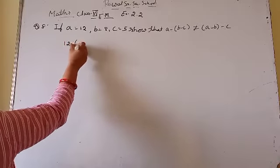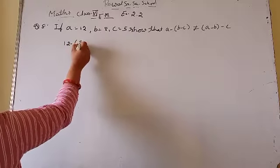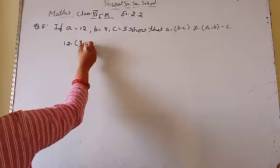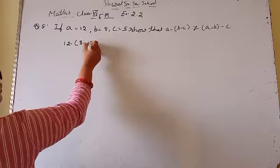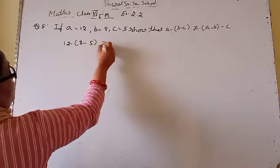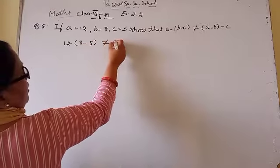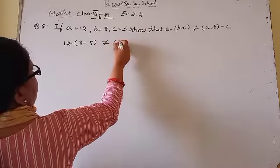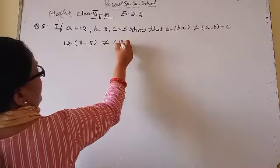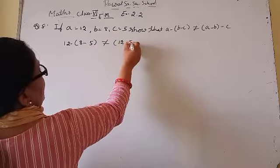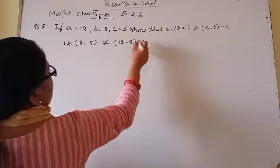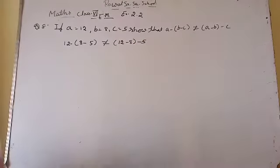तो LHS हो गया: 12 minus 8 minus 5. और RHS में: A की जगह 12, minus 8, और minus 5 हो गया — यानि (12 minus 8) minus 5.